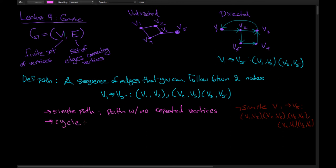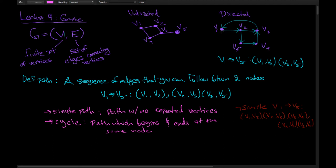Another definition is a cycle, which is a path that begins and ends at the same node. A cycle in this graph would be V1 to V2, V2 to V3, V3 to V4, and V4 back to V1. A cycle in this directed graph could be V1 to V2, V2 to V5, V5 to V4, V4 to V3, and then back to V1.